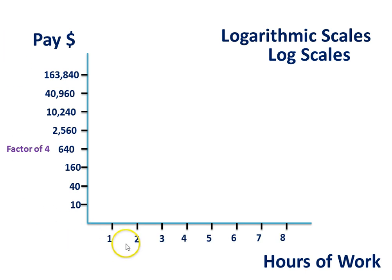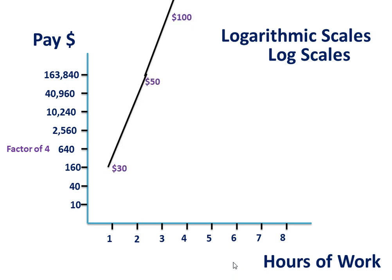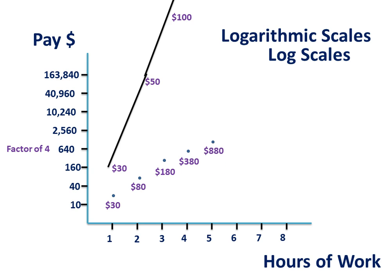Along the bottom we're going to continue to use a linear scale. So here's our data from the previous graph, let's try and plot it onto this logarithmic scale. In the first hour they earned $30 — we can put that in easily. In the second hour they earned an additional $50, bringing them to a total of $80. In the next hour they've earned an additional $100, so that brings them to $180. In the next hour they must have earned $200, bringing them to $380. In the following hour they must have earned $500, which brings them to a total of $880.